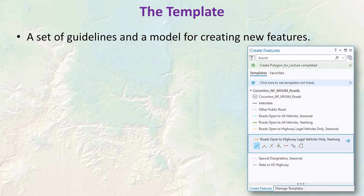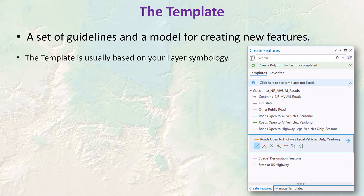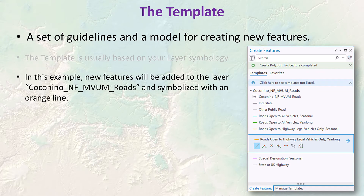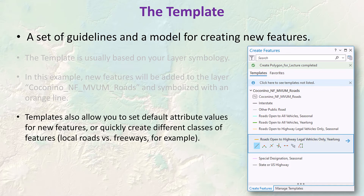Let's discuss the template. A template is basically a set of guidelines and a model for creating new features, and it's usually based on your layer symbology. If you have your layer classified by some attribute value, the template allows you to create new features automatically classified into your layer classes. In this example, new features will be added to the Coconino Motor Vehicle Use Map Roads layer, symbolized with an orange line, and automatically assigned the attribute value 'Roads Open to Highway Legal Vehicles Only Year Long.' Templates also let you set attribute values or quickly create different classes of features, such as local roads versus freeways.